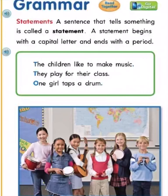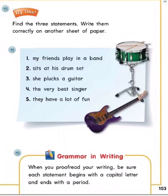Grammar: statements. A sentence that tells something is called a statement. A statement begins with a capital letter and ends with a period. The children like to make music. They play for their class. One girl taps a drum. Try this: find the three statements and write them correctly. 1. My friends play in a band. 2. Sits at his drum set. 3. She plucks a guitar. 4. The very best singer. 5. They have a lot of fun.